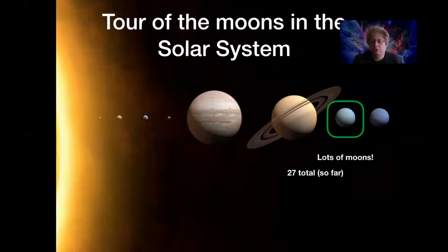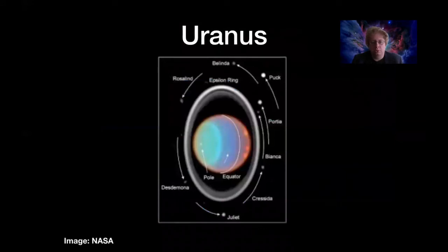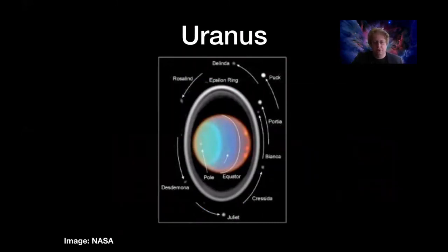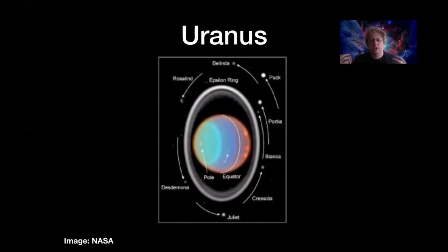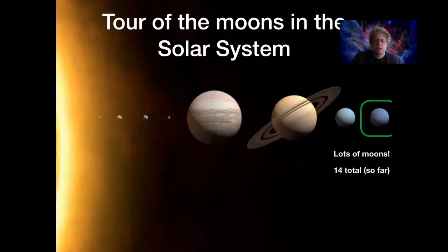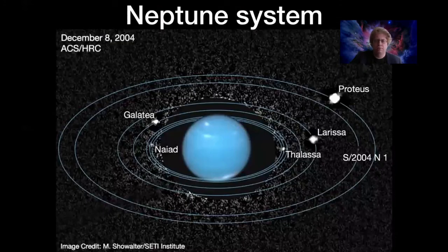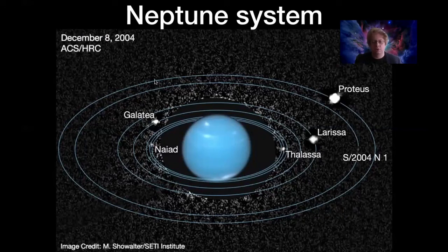Uranus has 27 known moons and almost certainly more. The close-in moons orbit in a plane, likely formed in circumplanetary disks, while those further out are more randomly scattered. It's harder to detect Uranus's distant moons because they're small and Uranus is far away. Neptune similarly has fewer known moons but almost certainly more undiscovered ones. The large inner moons tend to orbit in the same plane, indicating they formed in a circumplanetary disk.